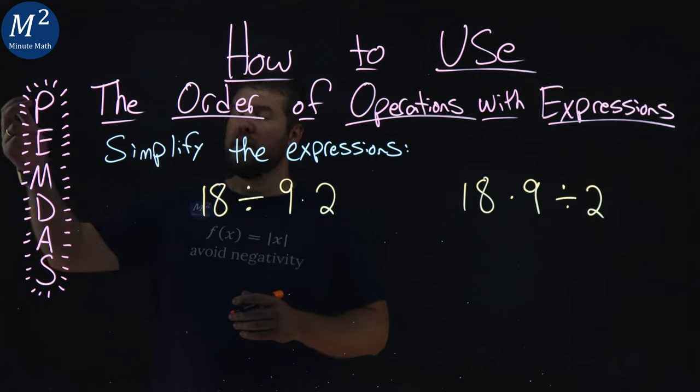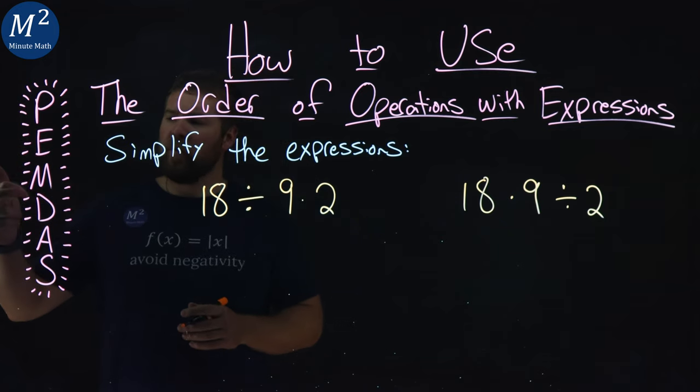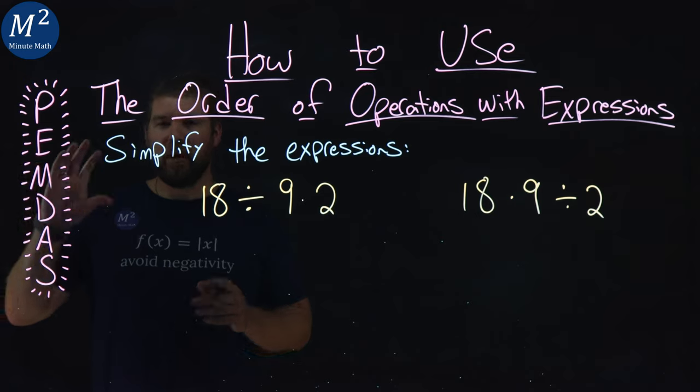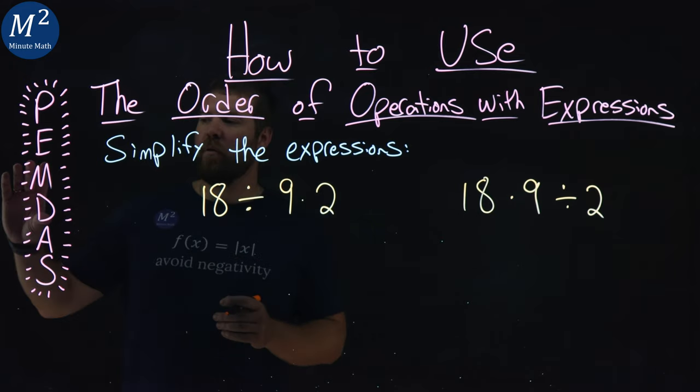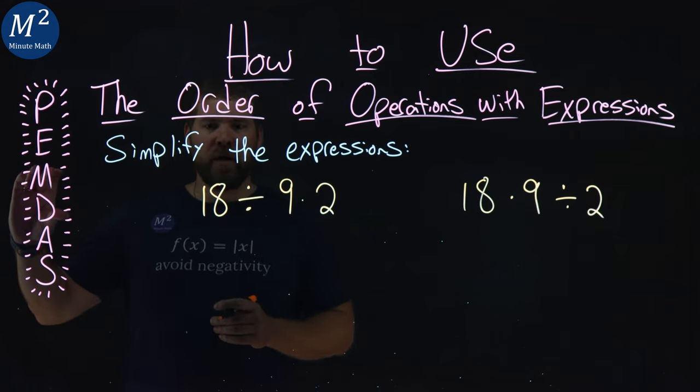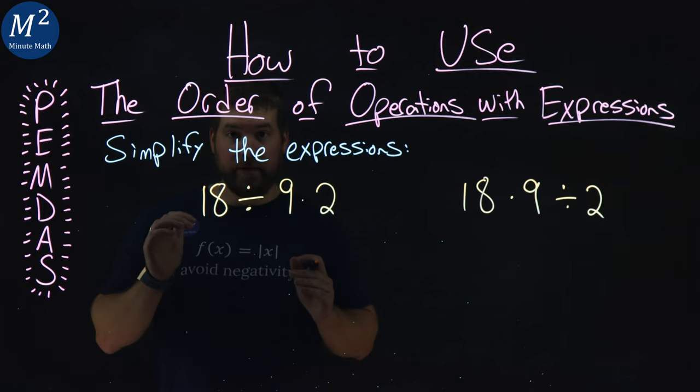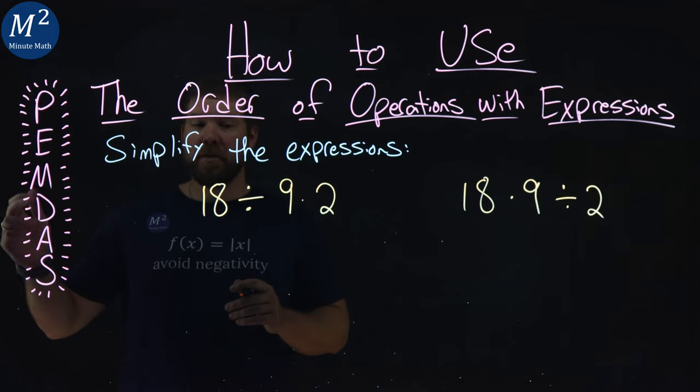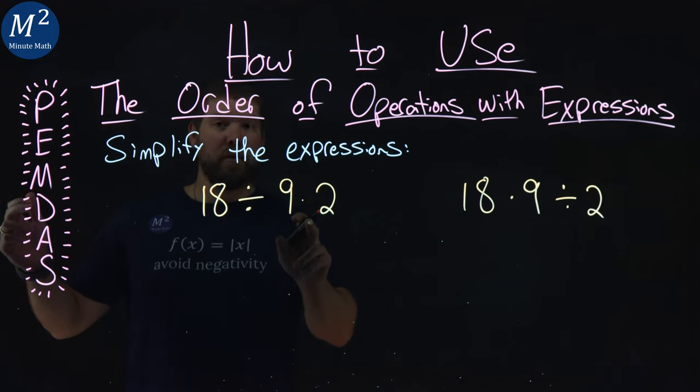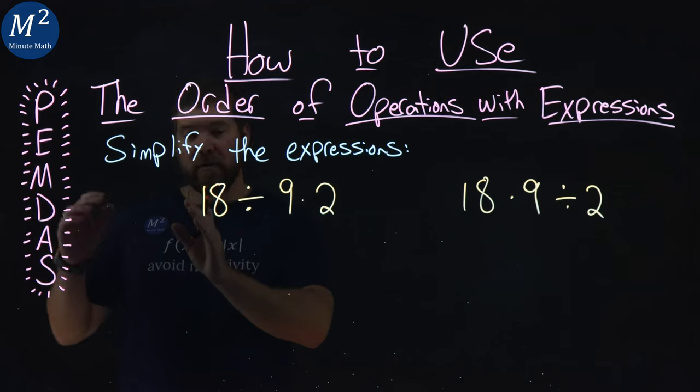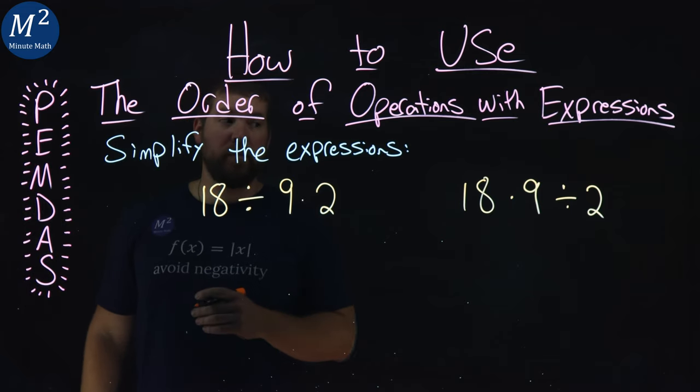Our order of operations, we don't have any parentheses, exponents, but the multiplication and division are basically the same thing, and so we kind of pair them together, and we read left to right. So with multiplication and division, it's the next ones we have here. They're paired together, so reading left to right, division comes first.